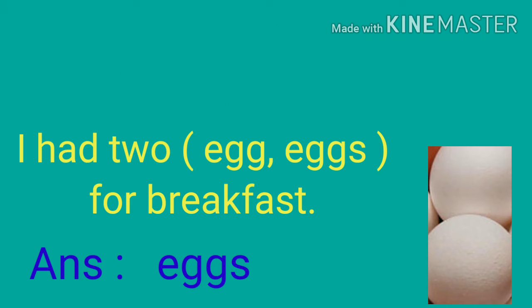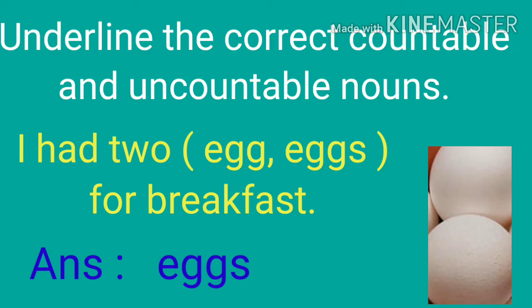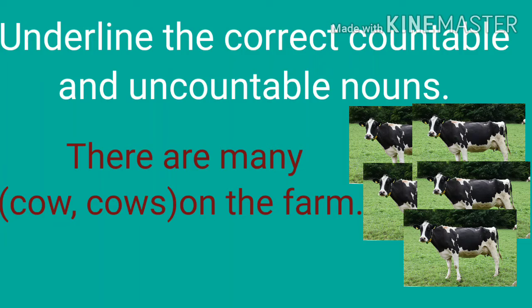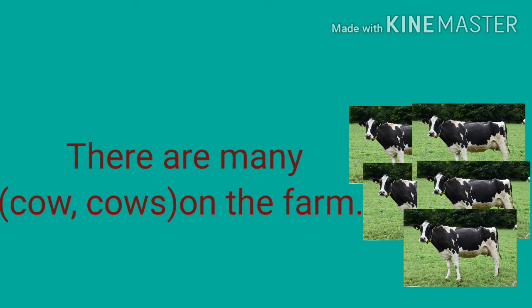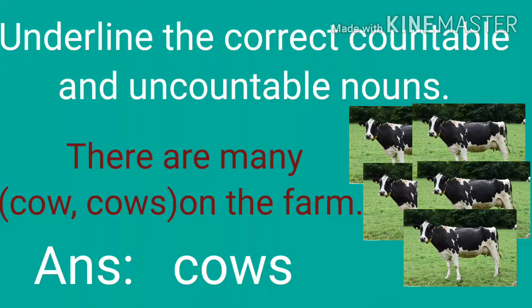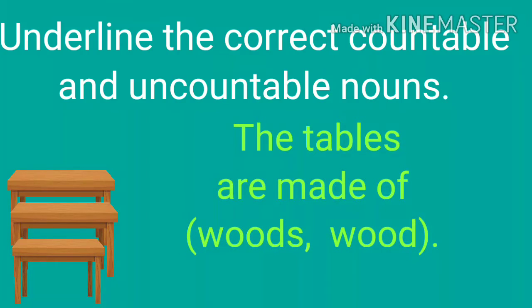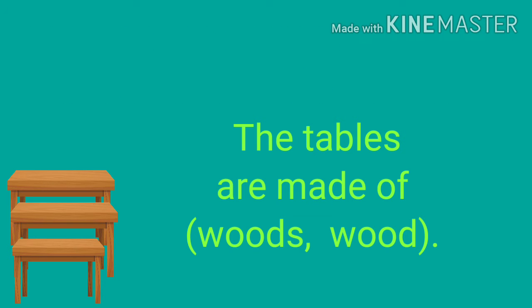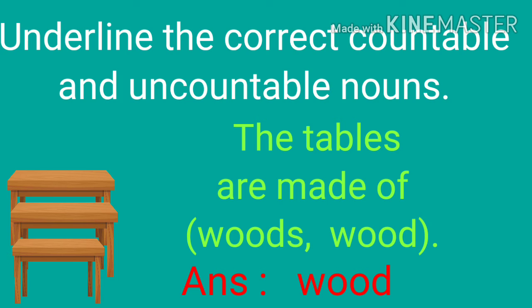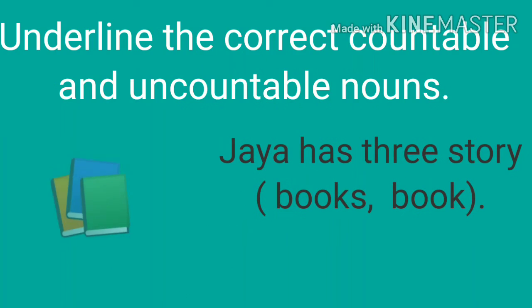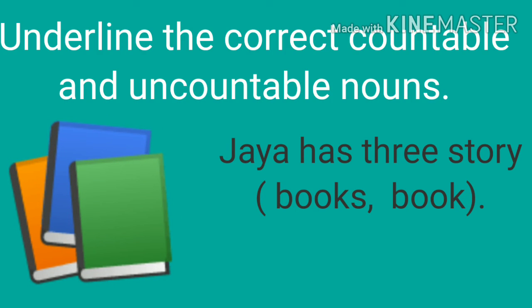'There are many cow or cows on the farm?' The correct answer is cows: 'There are many cows on the farm.' Next: 'The tables are made of woods or wood?' Tables is a countable noun, but wood is an uncountable noun. So the correct answer is wood: 'The tables are made of wood.'